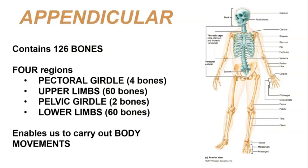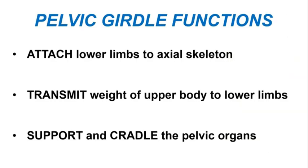Continuing with our review of the appendicular division of the skeleton, we'll now look at the bones belonging to the pelvic girdle. The pelvic girdle has three major functions. The first is to attach the lower limbs to the axial skeleton. The second is to transmit the weight of the upper body to those lower limbs. And third, the pelvic girdle also supports and cradles the pelvic organs.